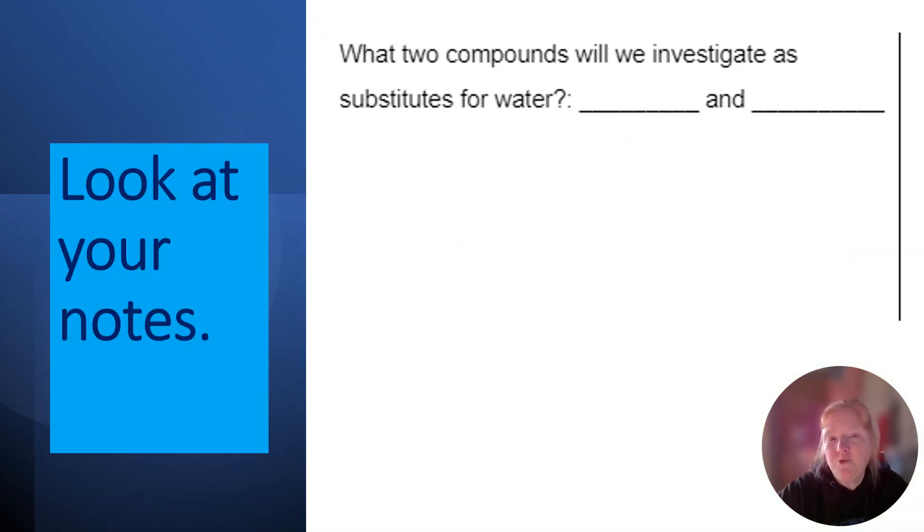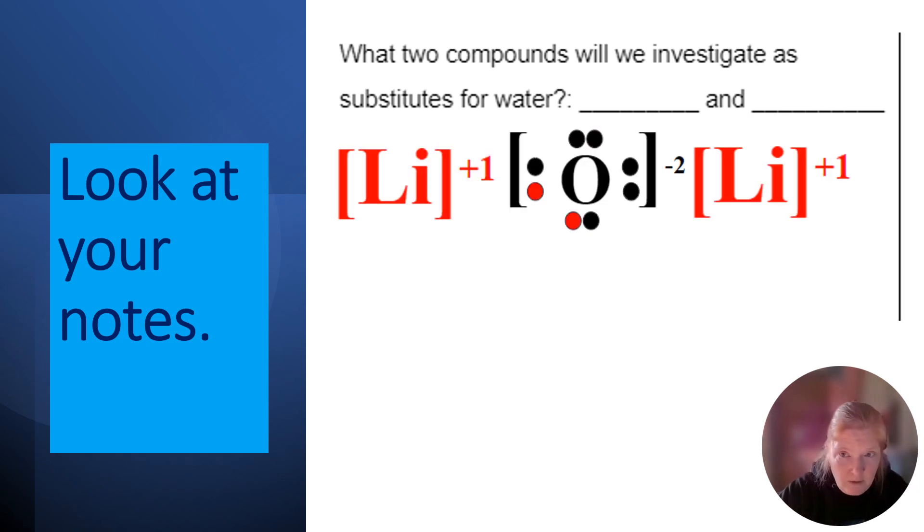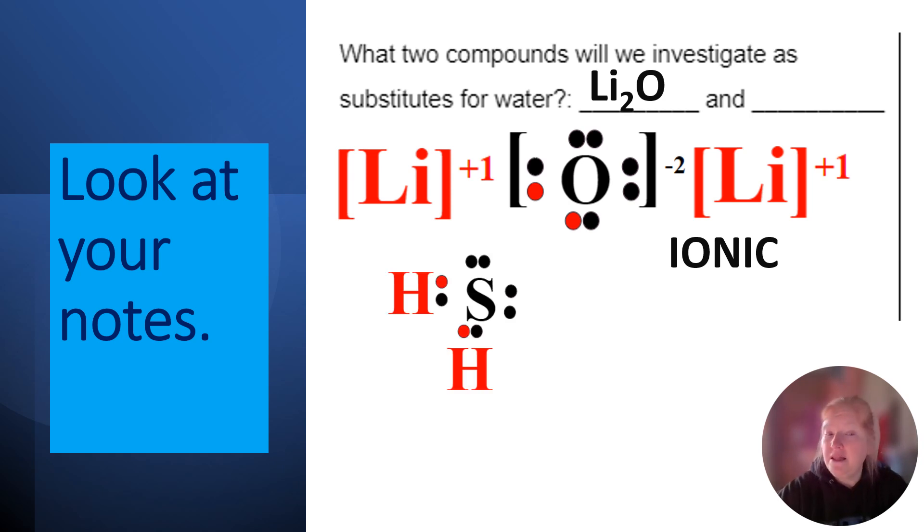So what two compounds will we investigate as substitutes for water? Well, we have this one, right? What's its chemical formula? Li2O. And it's ionic. And then we had this one, right? And what is the chemical formula for this one? That's H2S. And that one is covalent. So you have room in your notes. You should put both the chemical formulas, the drawings and the words ionic and covalent.